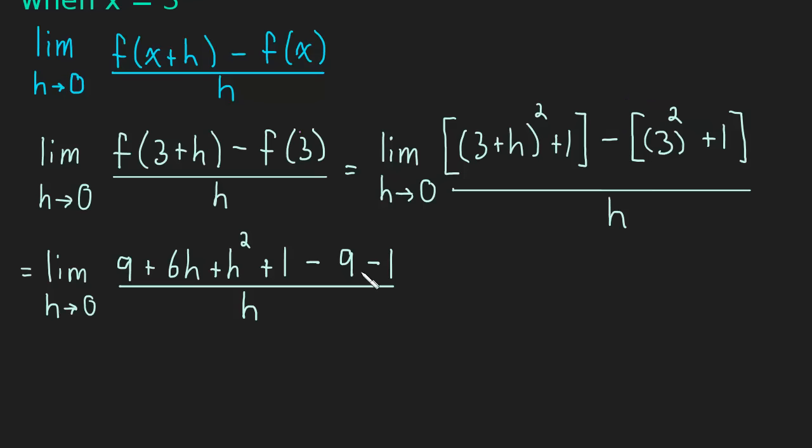So now we have a bunch of canceling to do. We have a plus 1 and a minus 1, a plus 9 and a minus 9, and now let me just rewrite this just so we can see what we have left here. We're left with a 6h plus h squared divided by h.